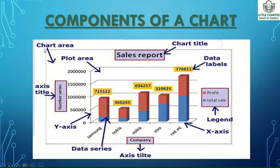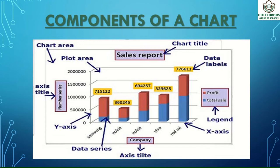The first component is the chart area. The chart area includes all objects and elements in a chart, like the plot area, axes, data series, and data table. Next is the category axis: the horizontal axis of a chart. The value axis is the vertical axis of the chart, representing values.